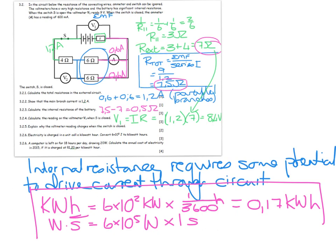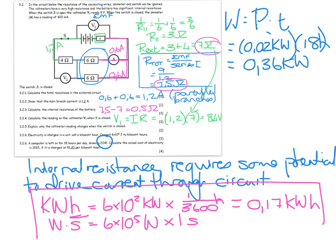And then finally, we have to work out the cost of a certain appliance. A computer is left on for 18 hours a day, drawing 20 watts. The first thing I'm going to do is say work done equals power times time. The power is 0.02 kilowatts. How long do we leave it on for? 18 hours per day. So in one day, I use 0.36 kilowatt hours each day.